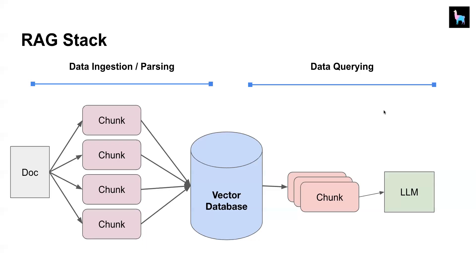We have seen a basic RAG stack where, given a document, we create chunks, push it into a vector DB or in-memory vector index, and during the querying stage we retrieve certain chunks and send them to a response module to generate a response using an LLM. We created a basic RAG pipeline using Claude 3 Opus in the last video.